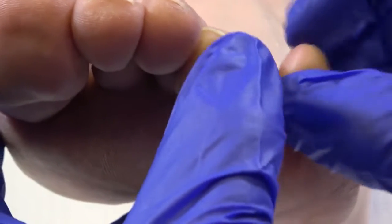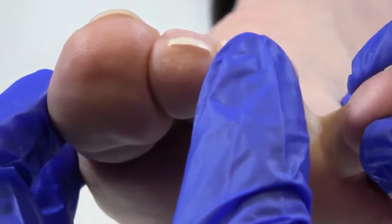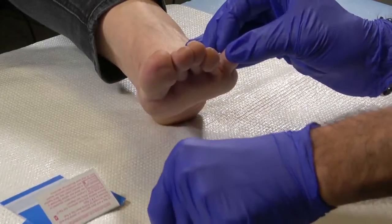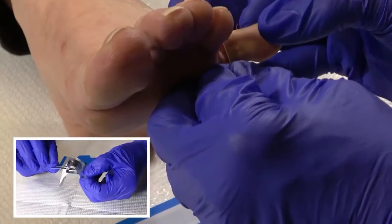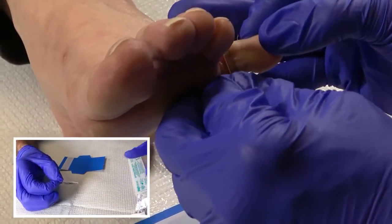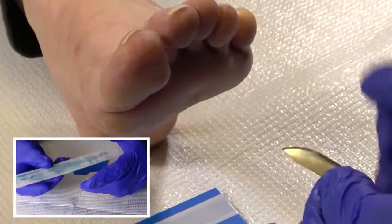The collection method for a web space is a simple superficial skin scraping performed in office. The scraping can be performed utilizing a 10 or 15 blade, however any size blade may be used. Specimen collection may also be accomplished through an appropriate curette procedure should you be inclined.